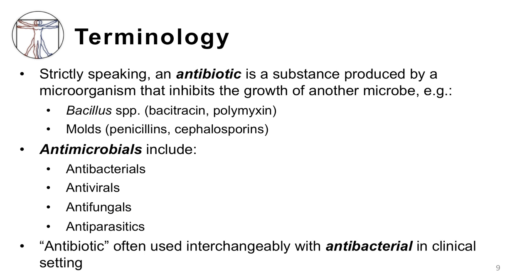Now let's cover some basic terminology. Strictly speaking, an antibiotic is a substance produced by a microorganism that inhibits the growth of another microbe. Microorganisms use these substances to maintain a competitive advantage in their local environment. For example, Bacillus species might produce antibiotics that target other bacteria, while certain fungi might secrete substances that kill bacteria.